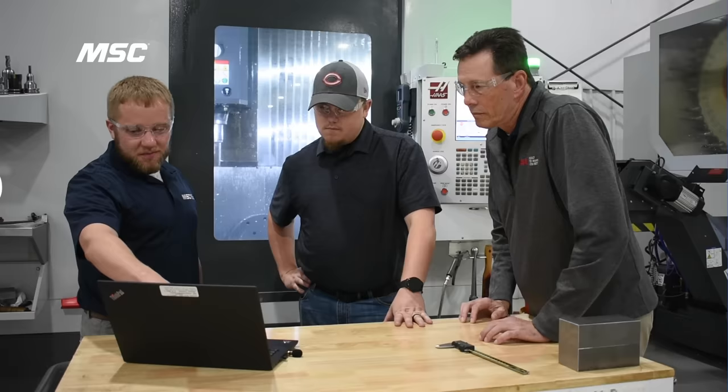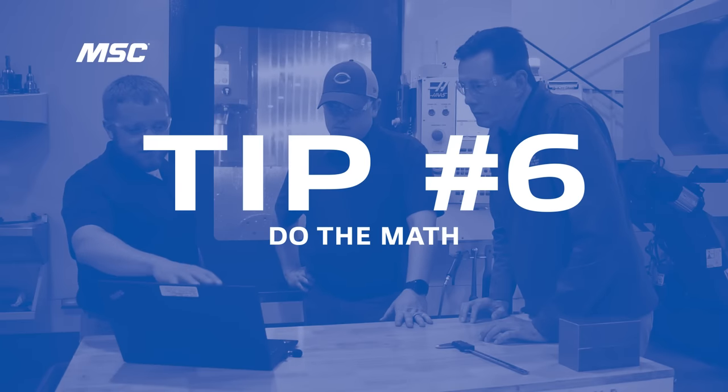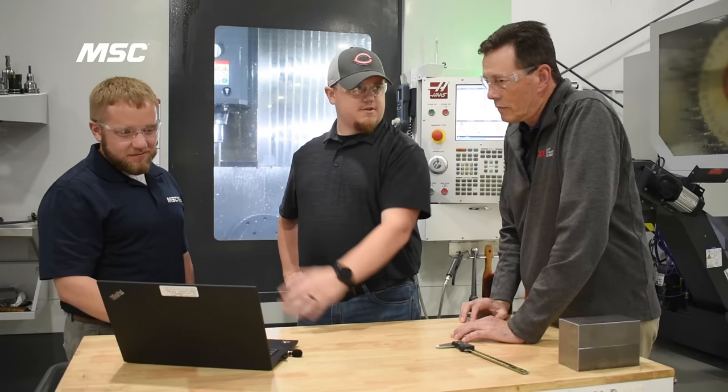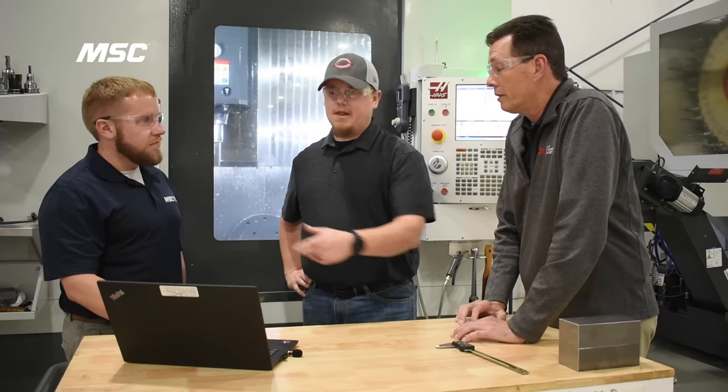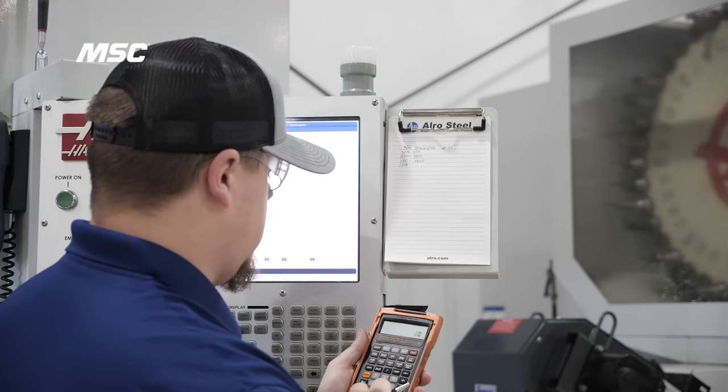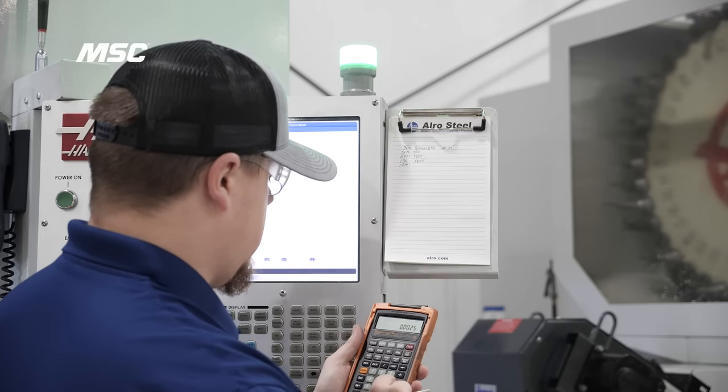Tip number six is do the math. It's no secret that carbide typically holds a higher cost. This can mean a lot to production workplaces with high mix low volume. But in comparison to high speed steel, carbide almost always produces a lower cost per part, which is just as important as the initial cost of the tool.